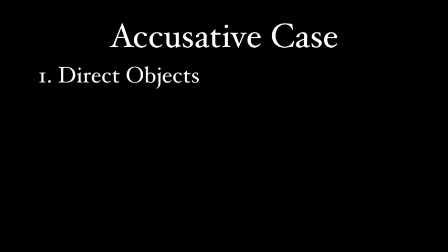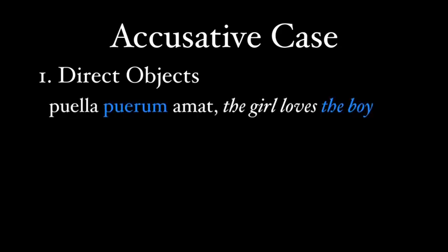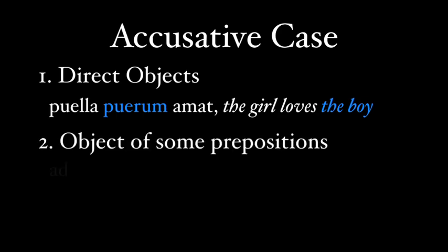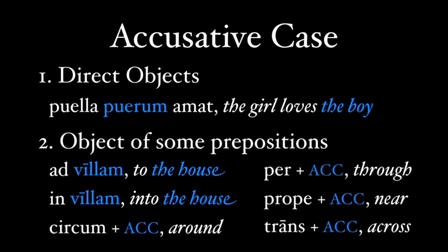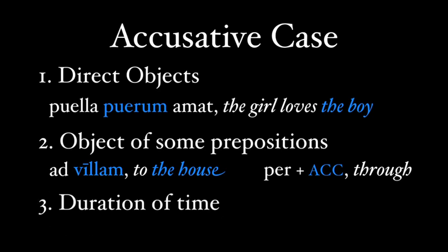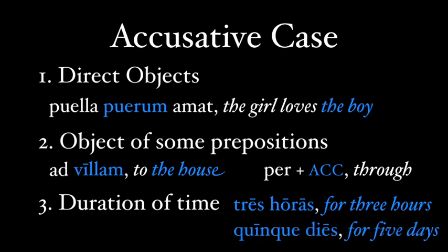The accusative case is used primarily for direct objects — the words that receive the action of the verb. In the sentence 'puella puerum amat,' the girl loves the boy, puerum is the direct object accusative; he receives the loving. You will also see the accusative used with certain prepositions, like ad — going to the house would be 'ad villam.' Many of these prepositions deal with motion towards, and 'in' plus the accusative means 'into,' so 'in villam' is into the house. Also, the accusative shows duration of time: 'tres horas' means for three hours, and 'quinque dies' means for five days.